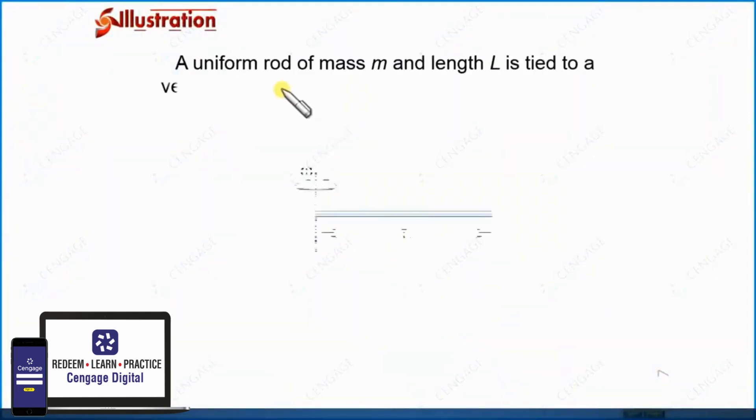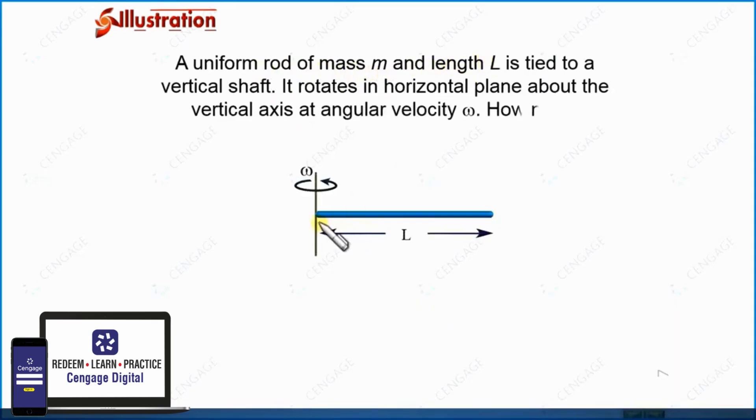In this illustration, we are given a uniform rod of mass m and length L. You can observe here this is a uniform rod where mass is uniformly distributed over the length, having mass m and length L.